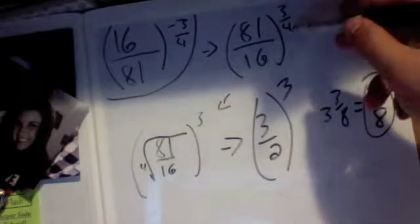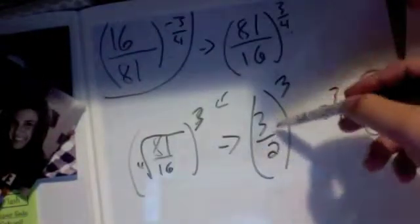Then whenever it's raised to a fraction you do the bottom number, you make it to that root, you make it the fourth root of this. And then just keep that three, keep your numerator of that. And then the fourth root of this you enter that in your calculator and it gives you one and one half or three halves.